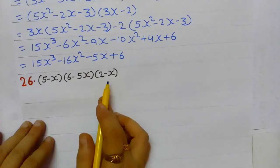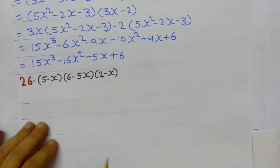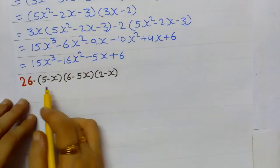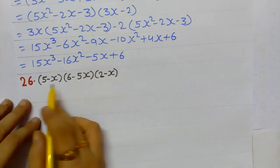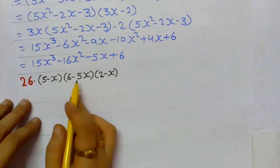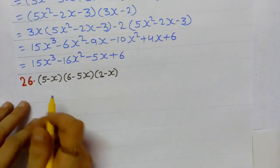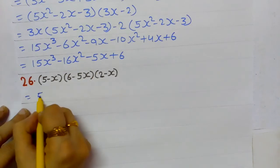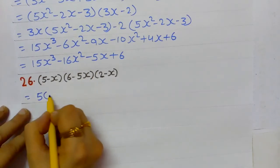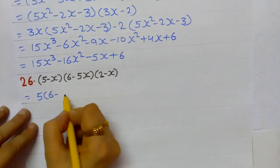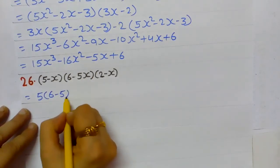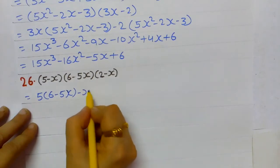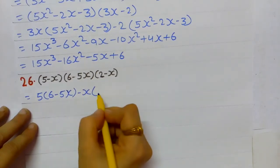For this question too, we first multiply the 1st and 2nd brackets using associativity of multiplication, then multiply that result by the 3rd bracket. We apply the distributive property to the 1st and 2nd brackets.